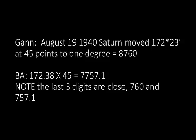Gann, August 19, 1940 — Saturn moved 172 degrees, 23 minutes. At 45 points to 1 degree equals 8,760. BA: 172.38 times 45 equals 7,757.1. Note the last three digits are close — 760 and 757.1 — we're off about 2.9 there.